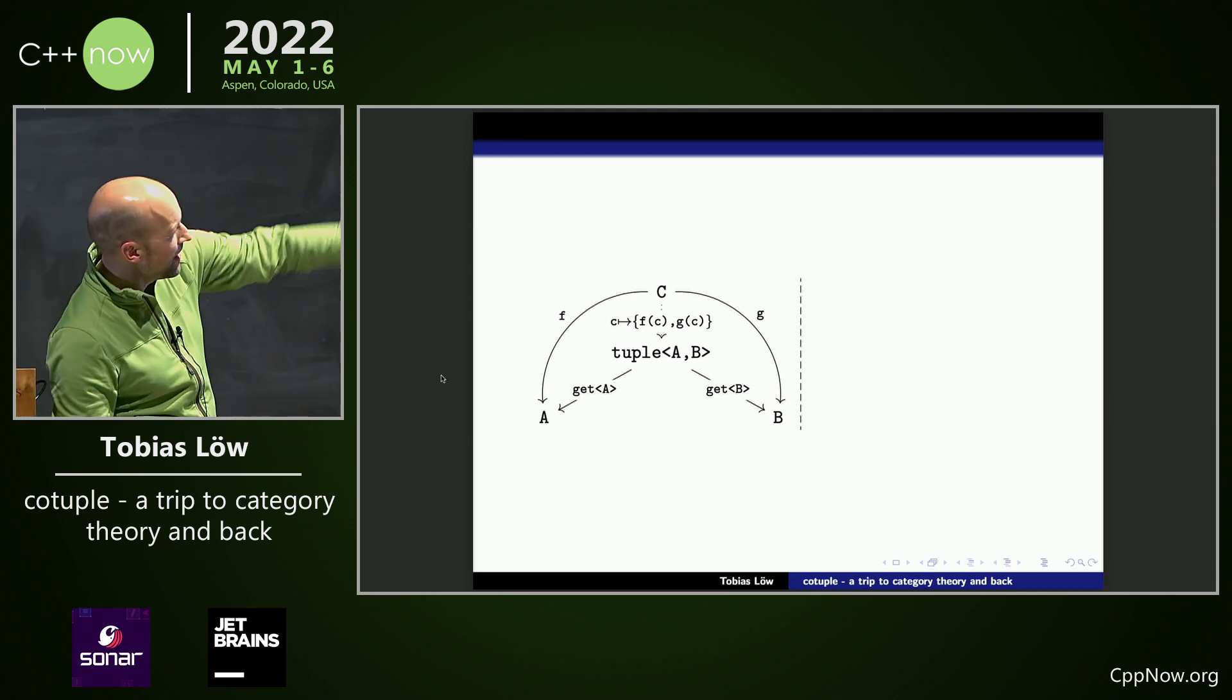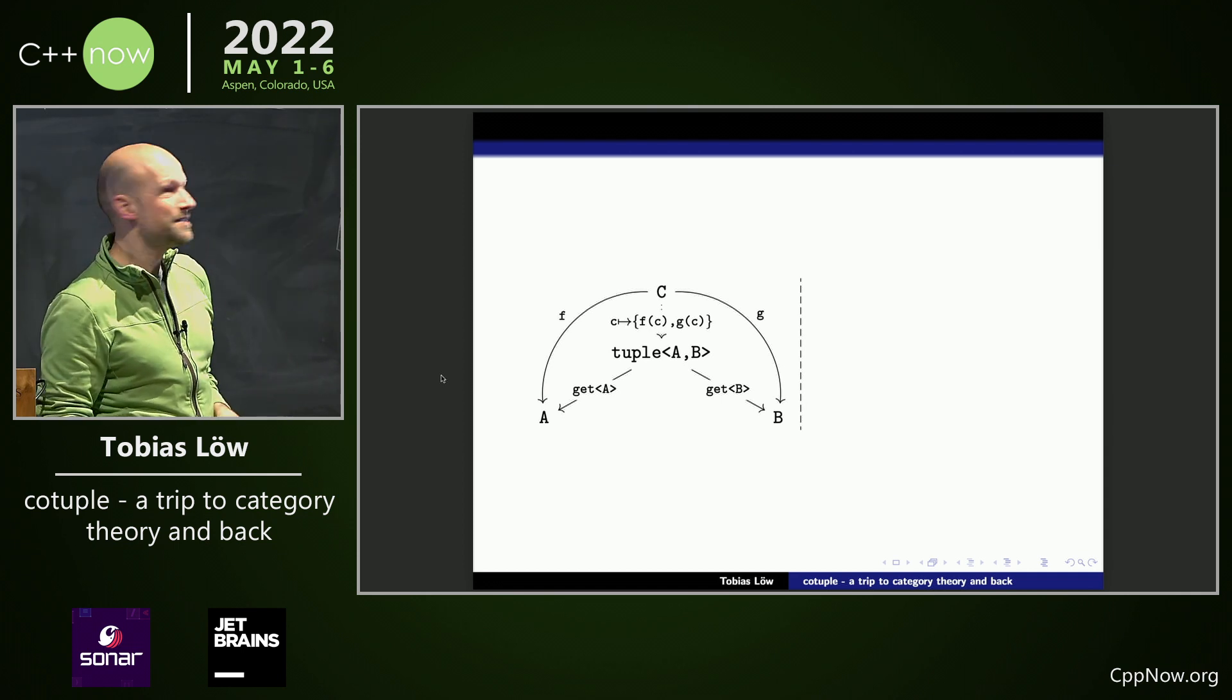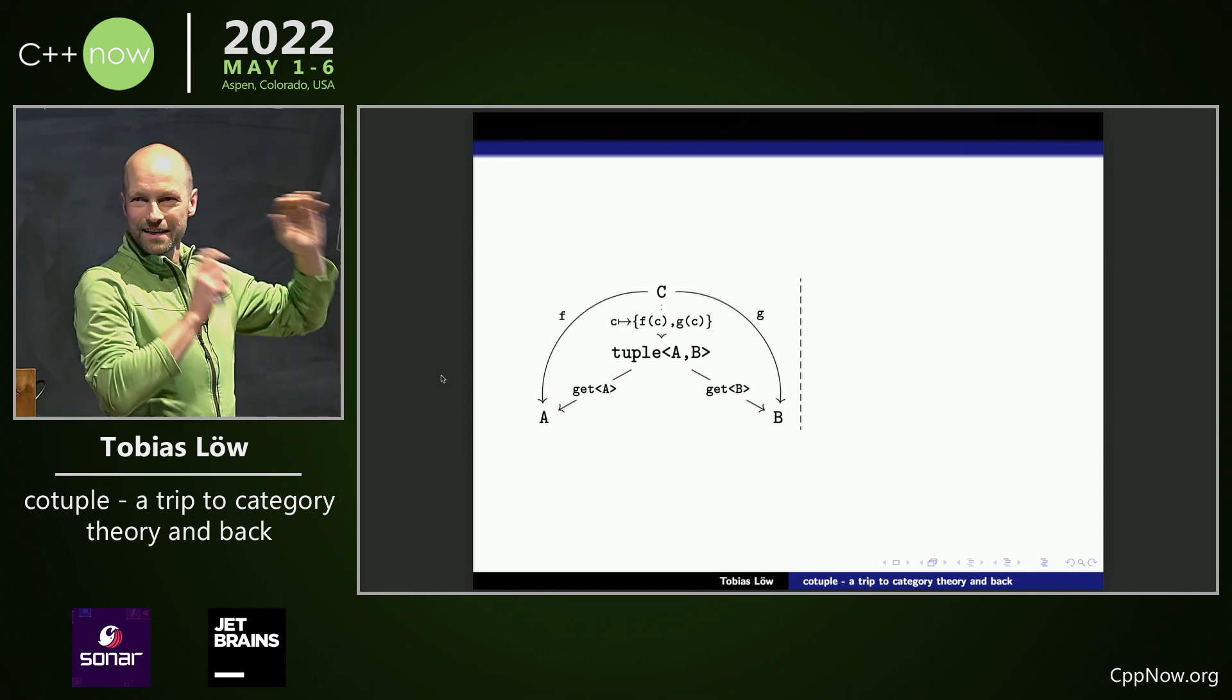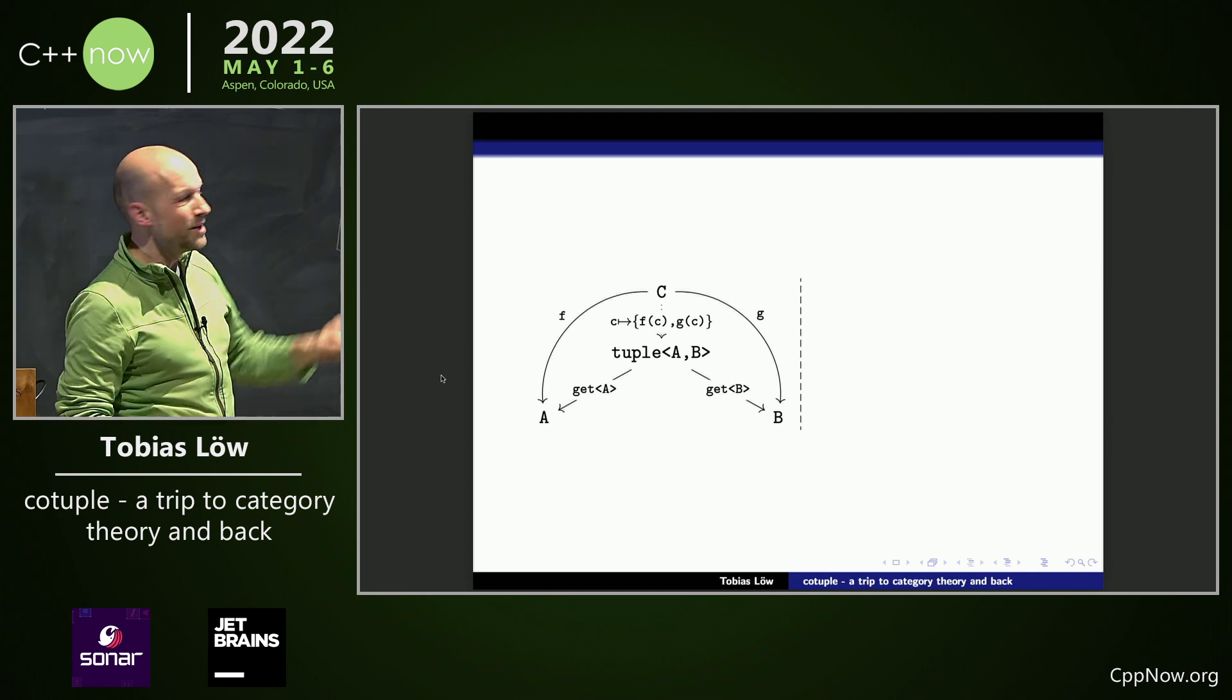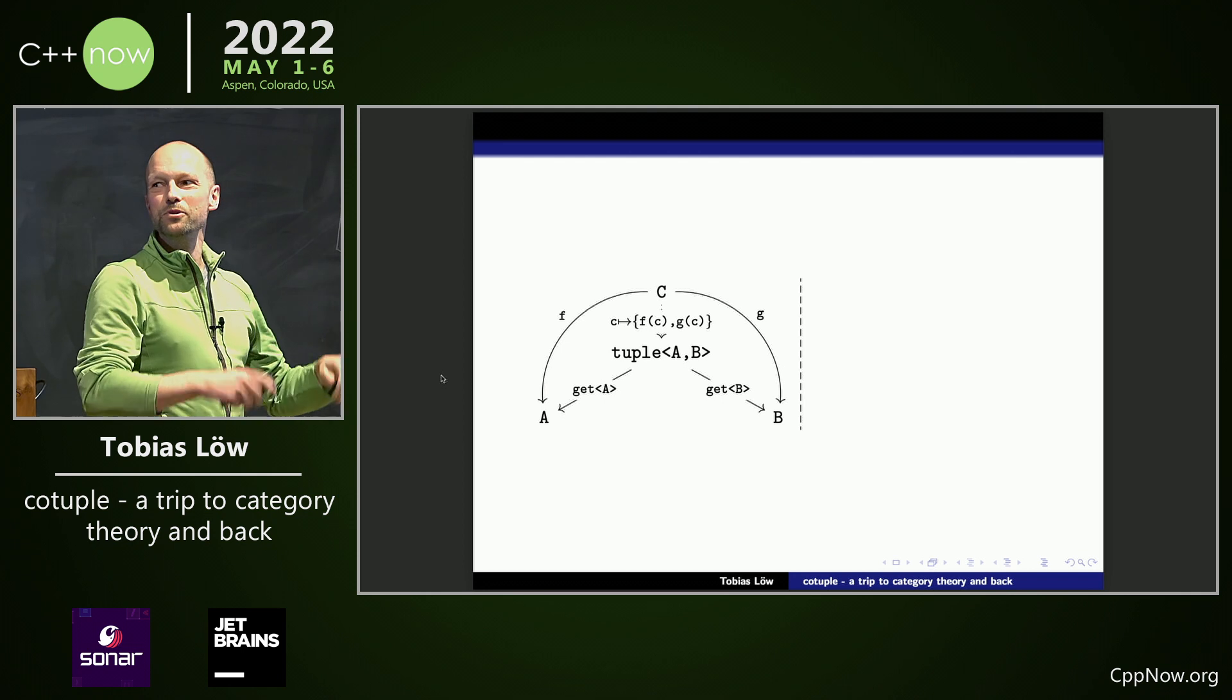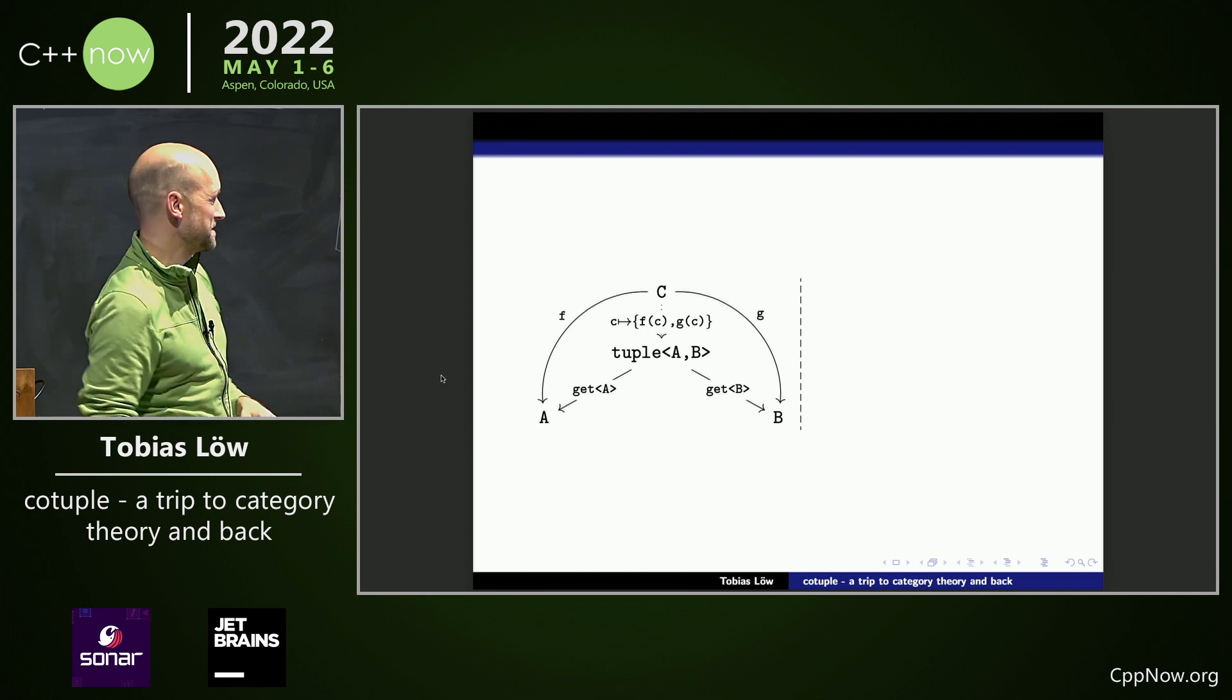Now you may ask, what is this dashed line in the middle? It's not from the Mac. No, this is like, think of it as a mirror. When the category theorist looks through it, everything turns around, and he puts a co in front of everything.